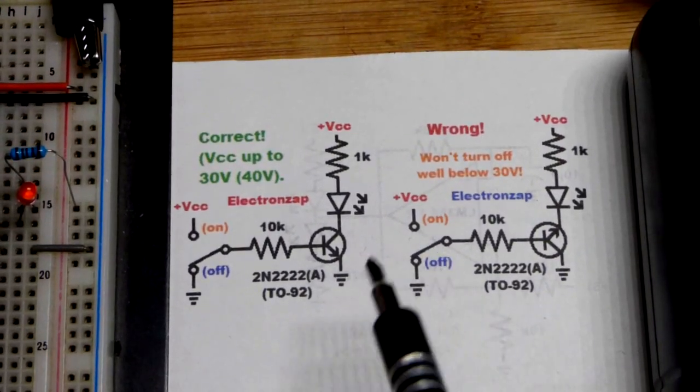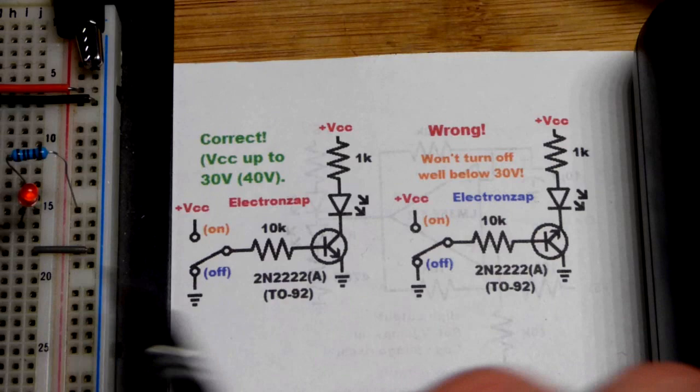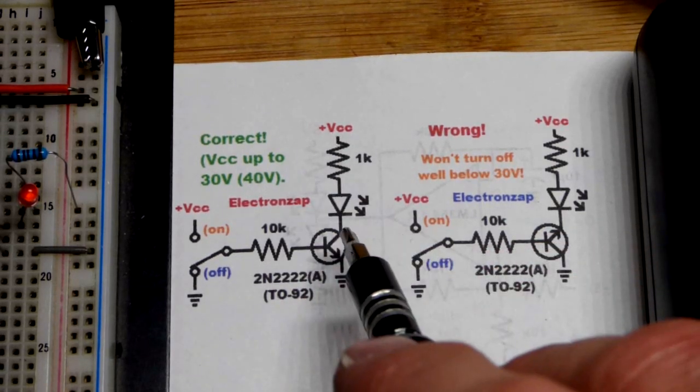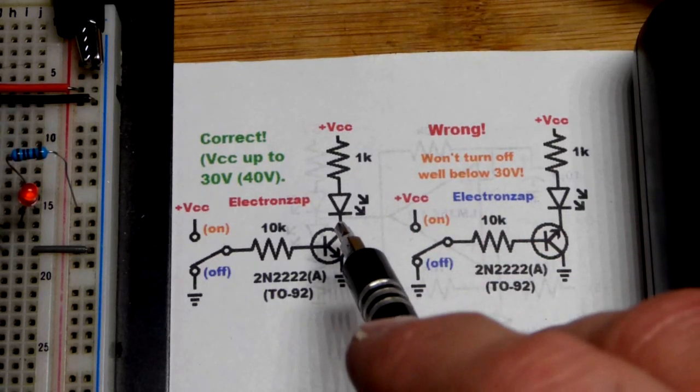I have this wired properly right now. I have the emitter to ground right there. And the collector is towards the more positive side of the supply. That is where the load goes.